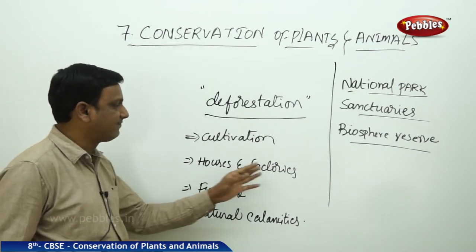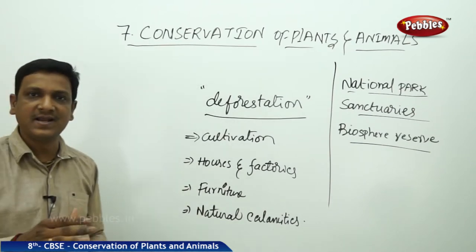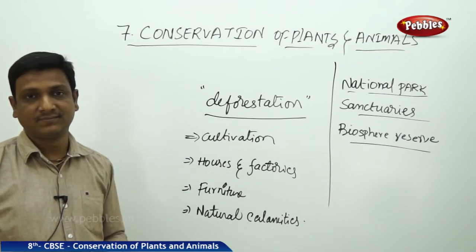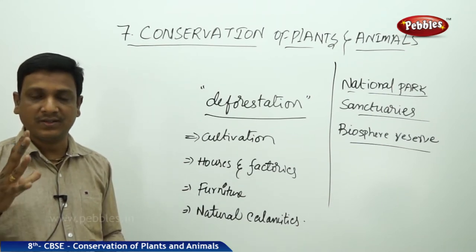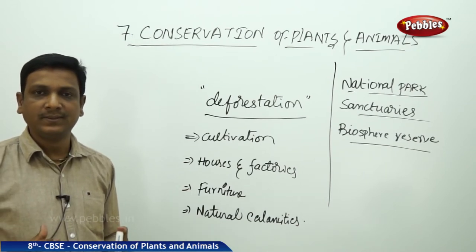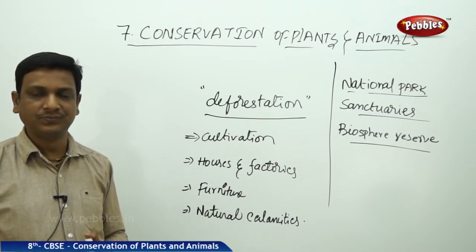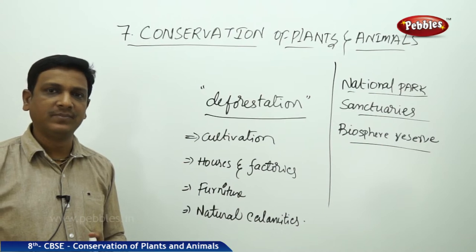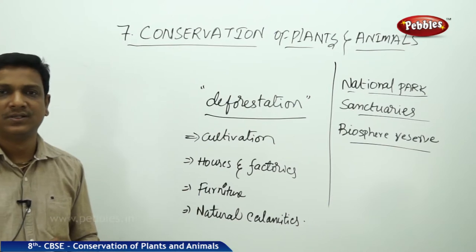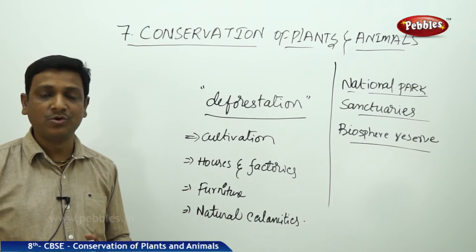A second reason is building houses and factories — to construct factories, houses, and industries, forest land is cleared. Another reason is to build reservoirs to store water for irrigation purposes, and for that too, many forest lands are cleared. This is also a social issue: people demand irrigation projects because they want water for their crops.